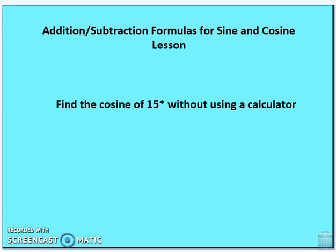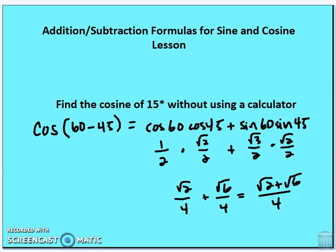Now let's find cosine 15° without a calculator. You can write 15° as either 45° − 30° or 60° − 45°. The idea is to use known angle values and substitute them into the sum and difference formulas. Using cosine(60° − 45°) = cosine 60° · cosine 45° + sine 60° · sine 45°, you should get (√2 + √6)/4.